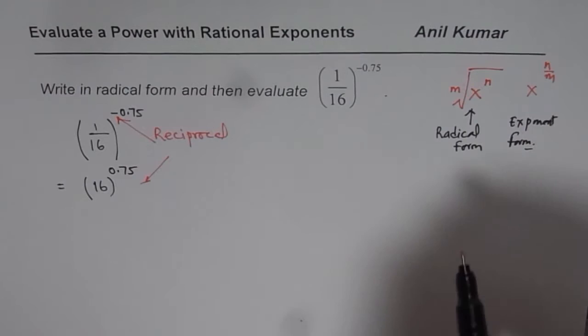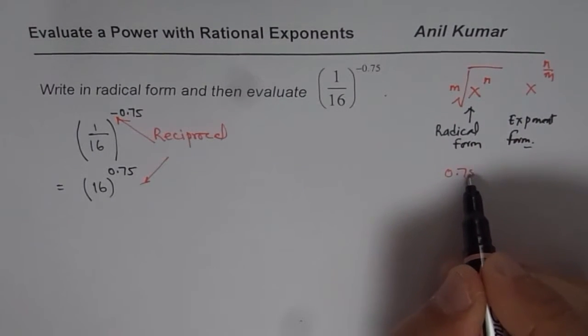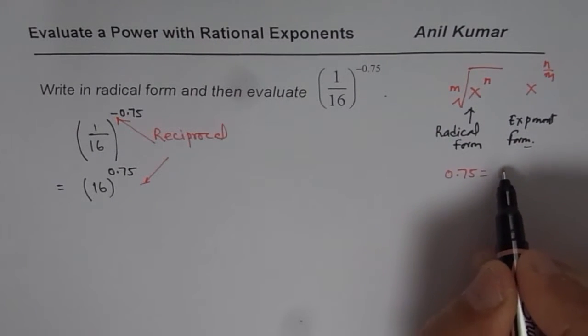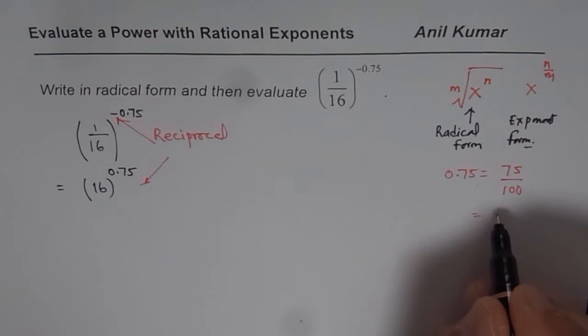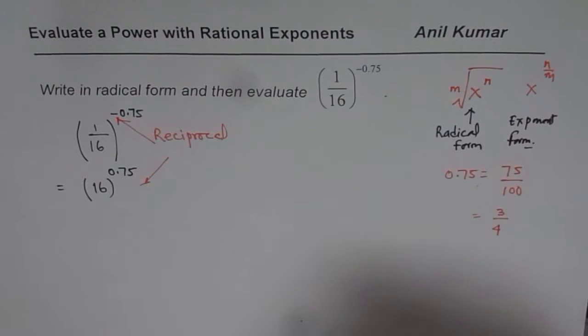Now, 0.75. How to write 0.75 as a fraction? Easy way is to write 75 over 100. Two decimals we have to move. So, we have to multiply and divide by 100. That could be simplified as dividing by 25. We get 3 over 4.